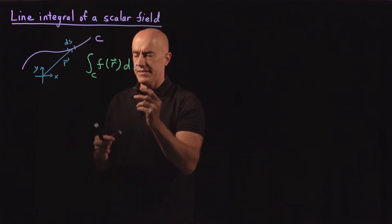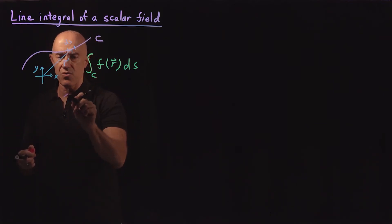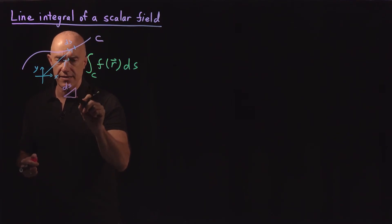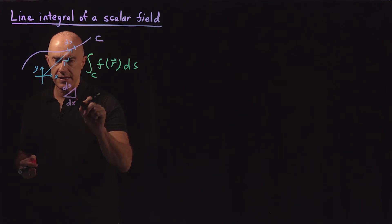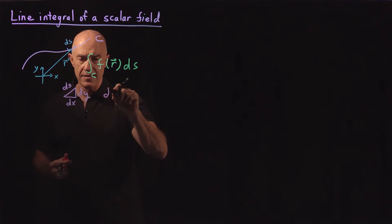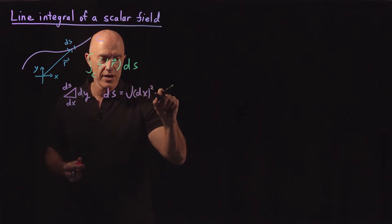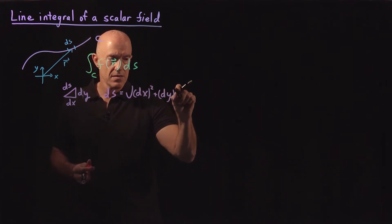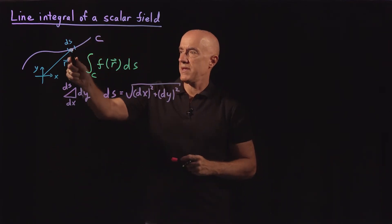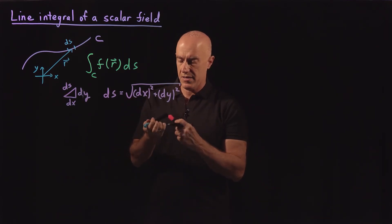What is this ds? If we have a small element ds, it consists of a dx and a dy. By the Pythagorean theorem, ds is equal to the square root of dx squared plus dy squared. That will be our ds in terms of the Cartesian dx and dy.